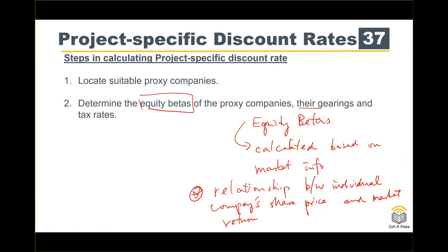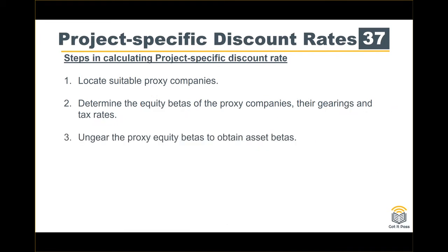Once you have the proxy company's gearing and tax rate, you can work back to get the asset beta. The equity beta includes both business risk and financial risk. The first step is to ungear the proxy equity betas to obtain asset betas. Asset beta cannot be directly observed unless a company is listed on the stock market without any gearing — in that case the equity beta equals the asset beta. Otherwise, if the company has gearing, the equity beta must be ungeared to become the asset beta.